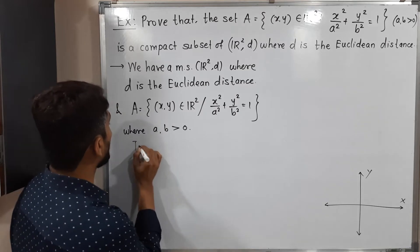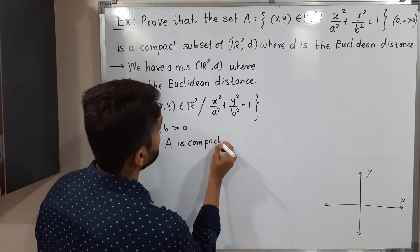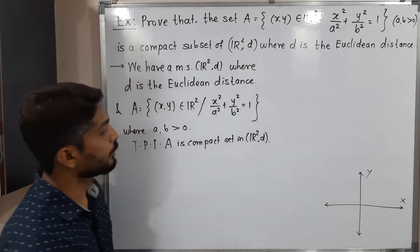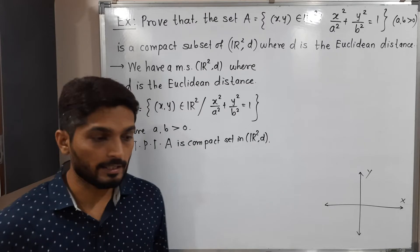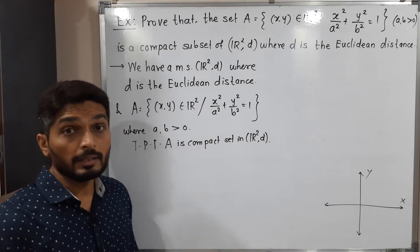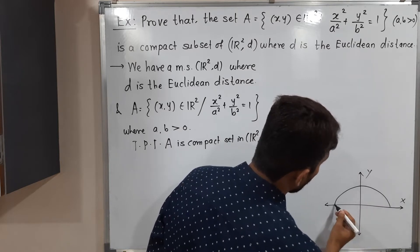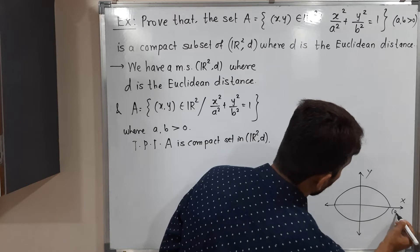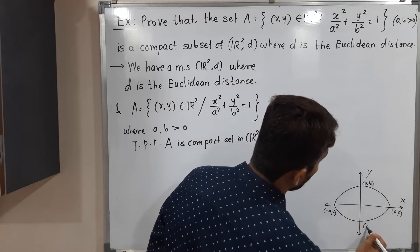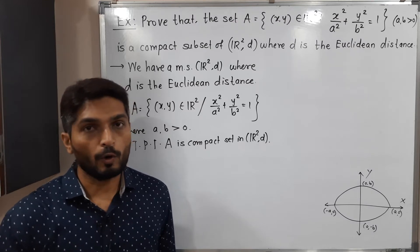We have to prove that A is a compact subset of R²D. The set A, defined by x²/a² + y²/b² = 1, represents an ellipse. This ellipse cuts the x-axis at points (a, 0) and (-a, 0), and cuts the y-axis at points (0, b) and (0, -b). We need to prove this ellipse is a compact set.